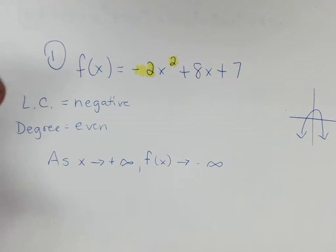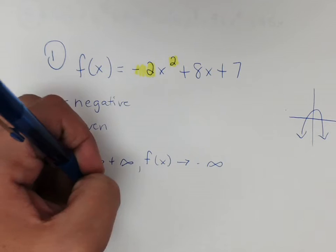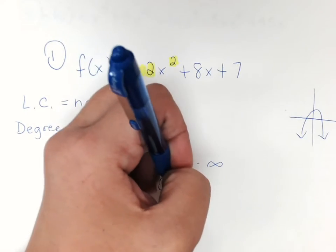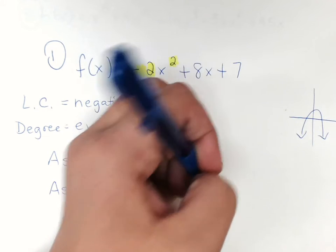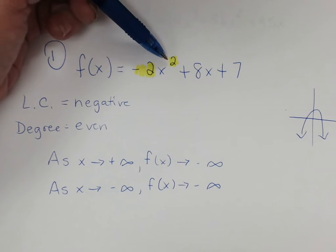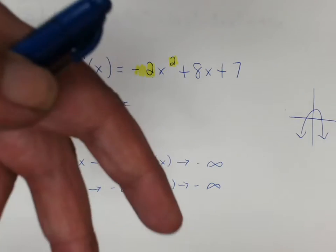And because this is an even graph, they both have the same end behavior on either side. So here in this case, as x approaches negative infinity, then f of x also approaches negative infinity. Right, because both sides of this function are pointing down. This is an even function, so both sides will have the same end behavior. And it was negative, so it must be pointing down.